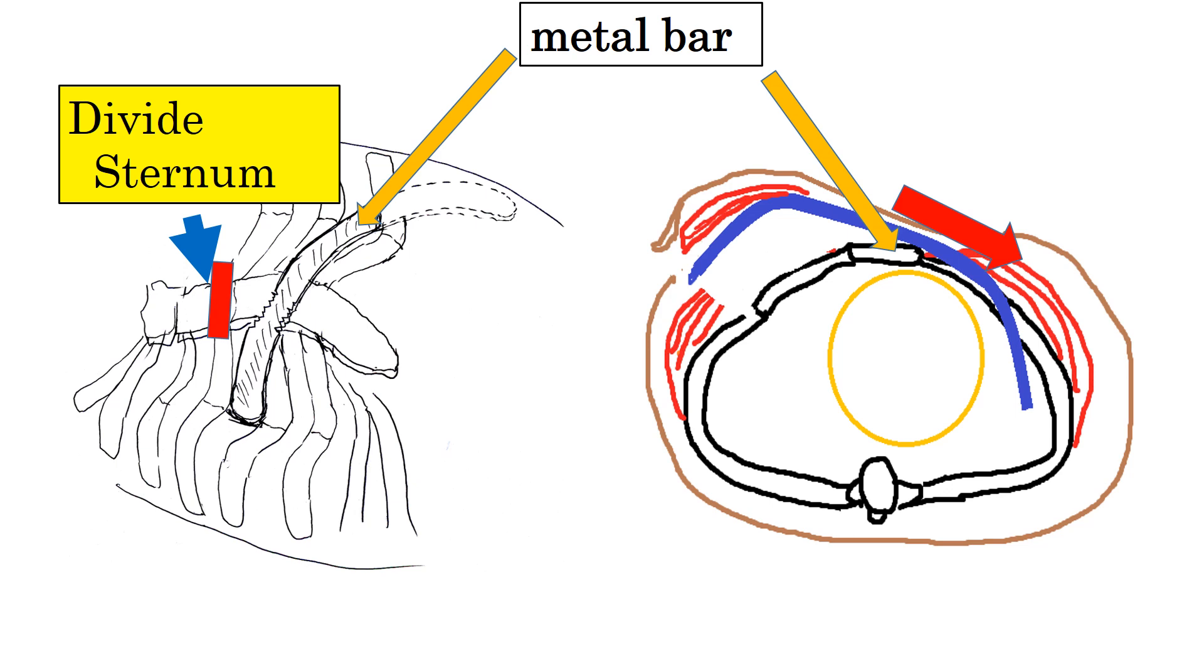In some cases, the protrusion cannot be corrected by simply pushing it down. This occurs because, besides the cartilages, the sternum, the bone at the center of the chest, is sticking out.